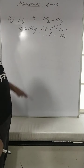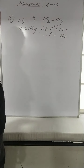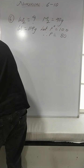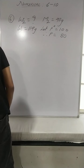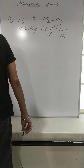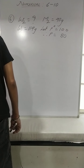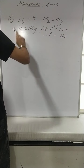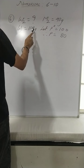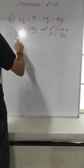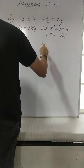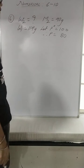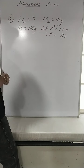Let us solve numericals 6 to 10. Numerical 6: calculate the mass of a non-volatile solute — molar mass is given, W2 is asked — dissolved in 104 grams of octane. That means it is the weight of the solvent. P0 is equal to 100, and the vapor pressure of our solution is reduced down to 80%, so that is going to be 80.